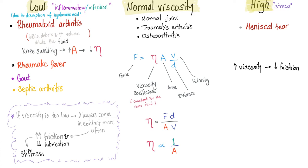For example, rheumatoid arthritis. In rheumatoid arthritis you have white blood cells, debris, and increased volume called joint swelling — all of this will dilute the viscosity. Going back to physics: the viscosity coefficient eta equals force times distance over area times velocity, where eta is inversely related to the area. In cases of rheumatoid arthritis you have increased area (joint swelling), therefore the eta is going to be low.